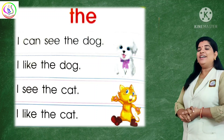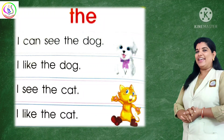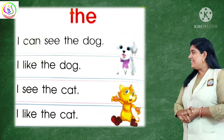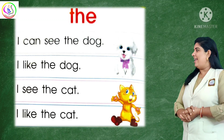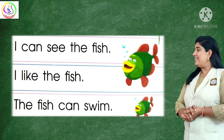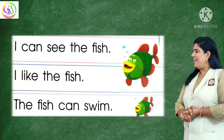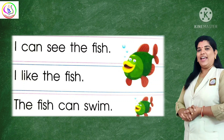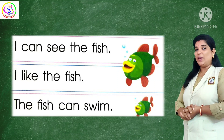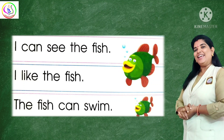Here is the page. Now it's time to read. I can see the dog. Yes, I can see the dog. I like the dog. Next one: I see the cat. I see the cat. I like the cat. I can see the fish. I can see the fish. I like the fish. The fish can swim. The fish can swim.